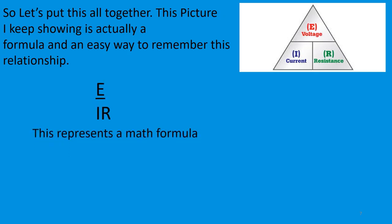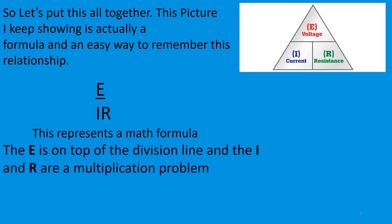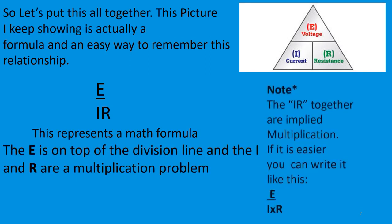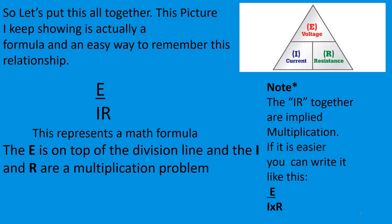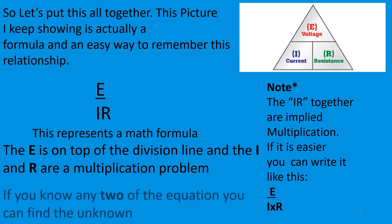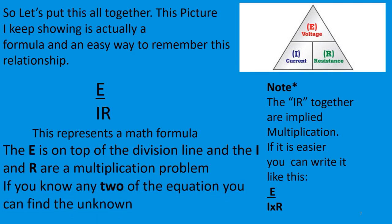It represents a math formula. E is on top of the division line, and I and R are implied multiplication. If it's easier, you can write it as E over I times R. If you know any two of the three values in the equation, you can find the unknown.